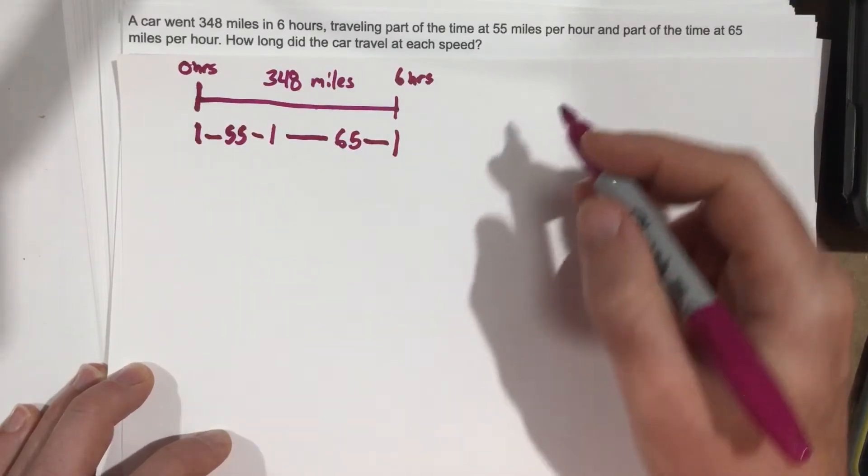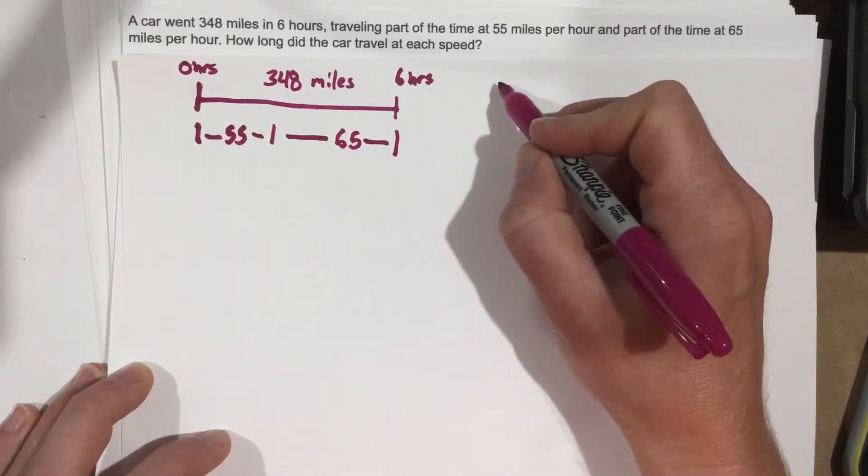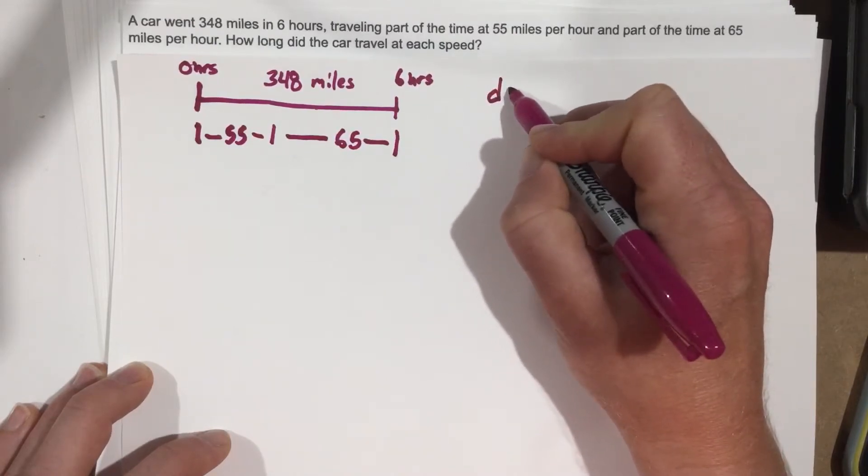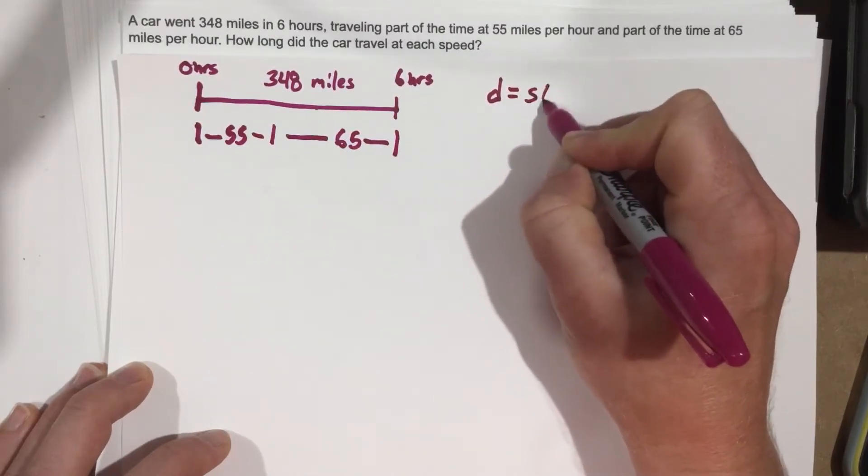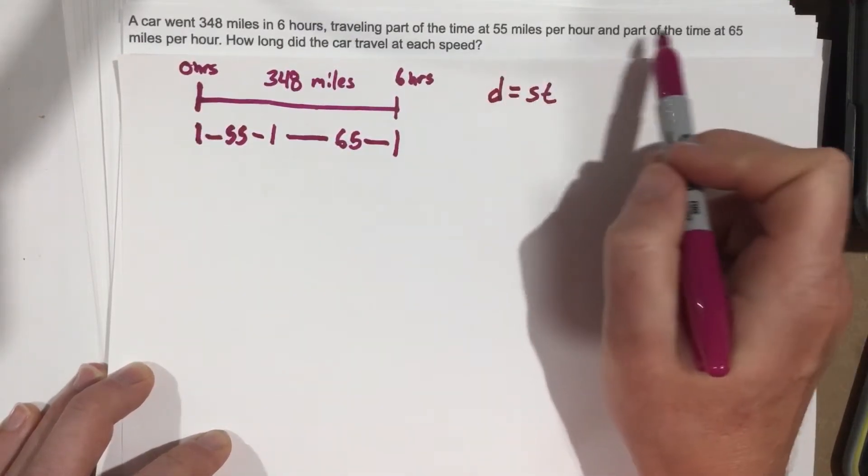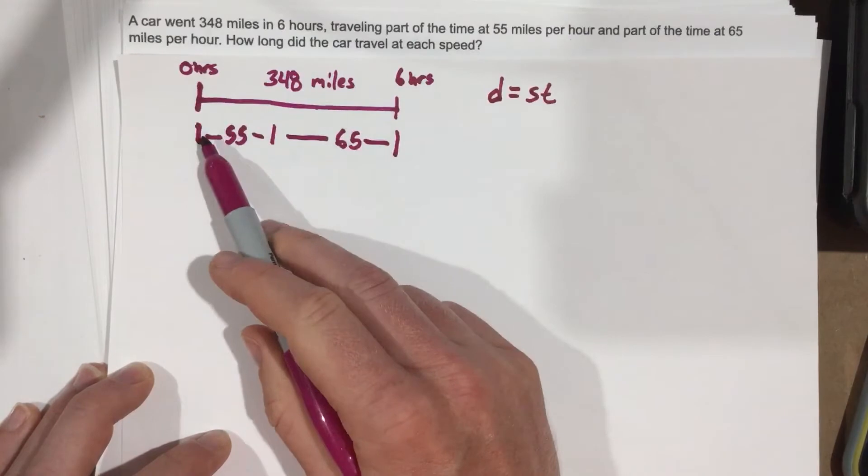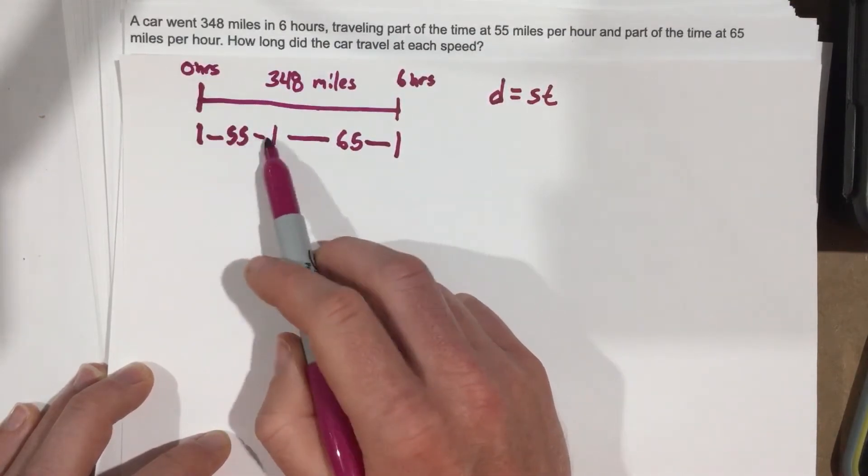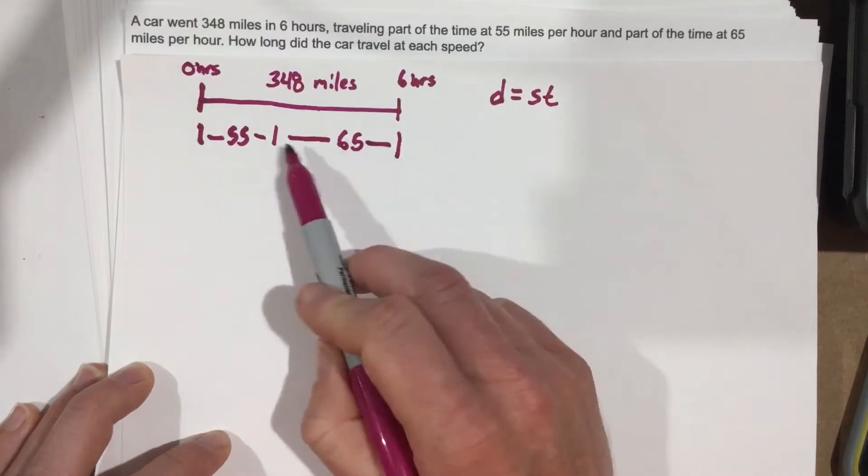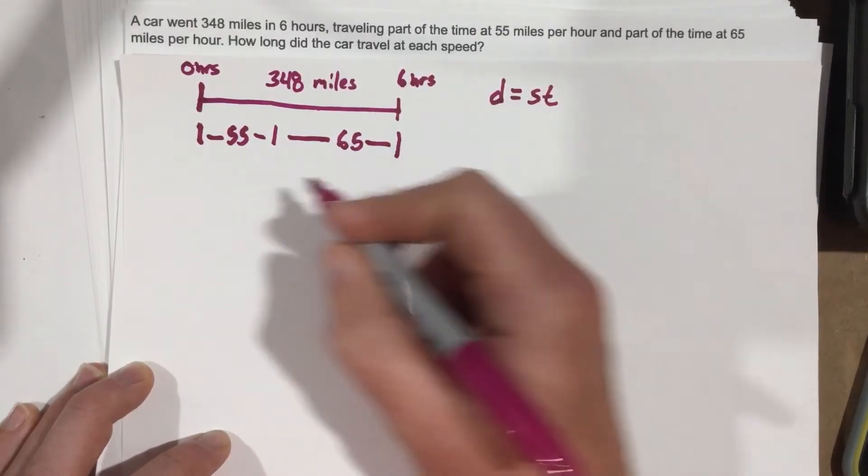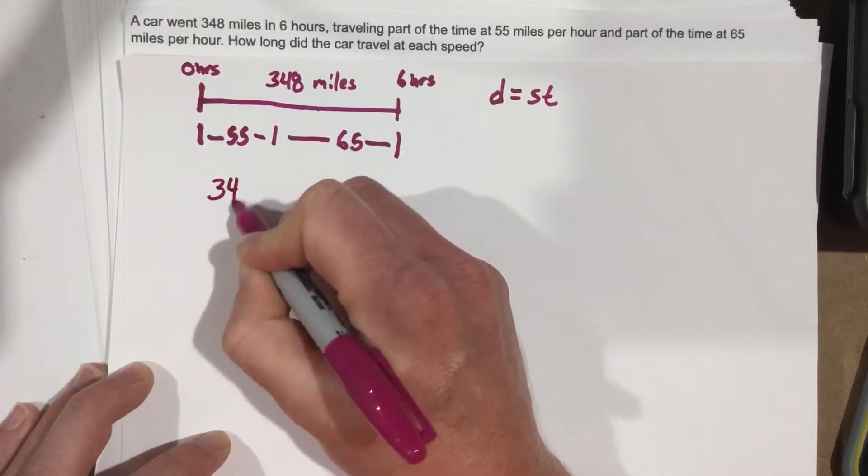Now, this problem is going to come down to using a formula that you may have seen in your physics class. We know distance equals speed times time. They give us two speeds here. And we know our distance is made up of going one speed for a certain amount of time and another speed for a certain amount of time. So our total distance for this formula is 348 miles.